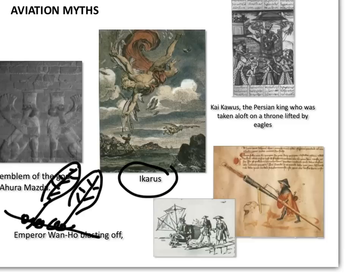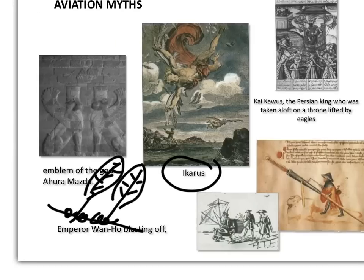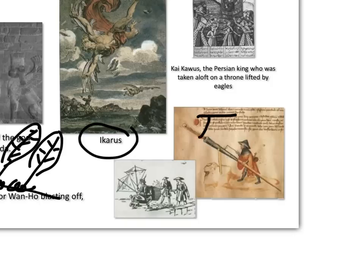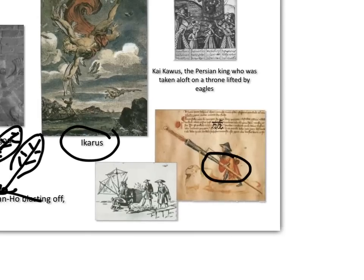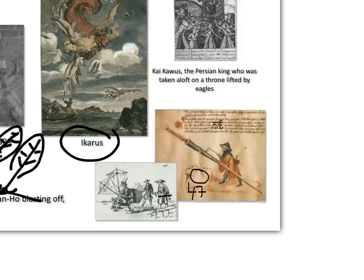Another aviation myth is the Chinese official Wang Hu. He was a minor Chinese official from the 16th century during the Ming dynasty who attempted to become the world's first astronaut. Taking advantage of Chinese know-how on rocket and fireworks technology, he set up 47 rockets underneath a chair. He used 47 servants to light the rockets, and after a huge explosion, the chair was gone.